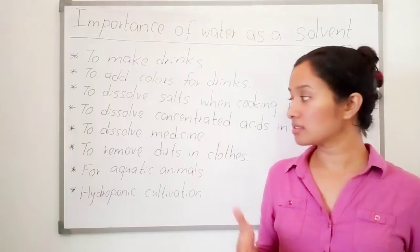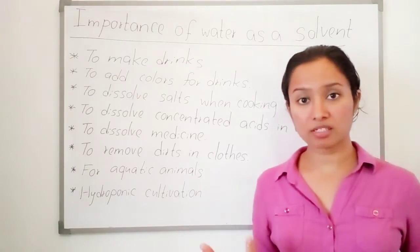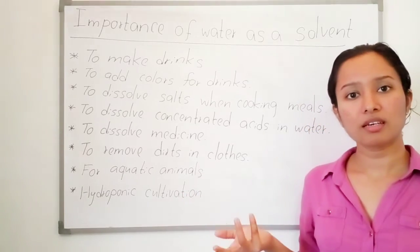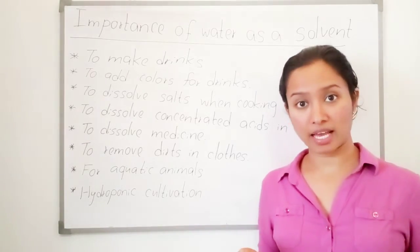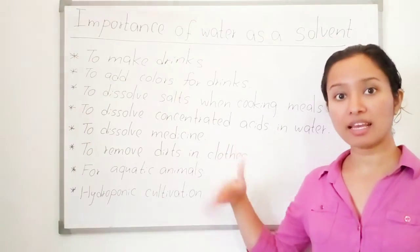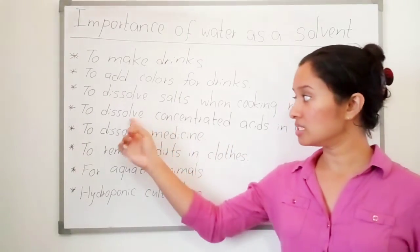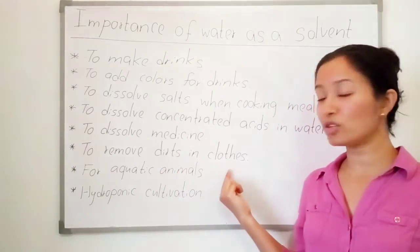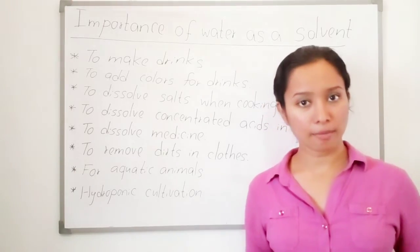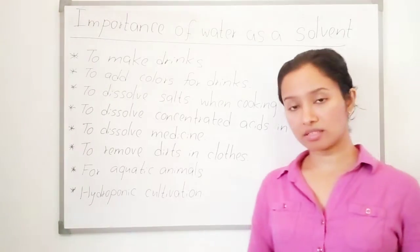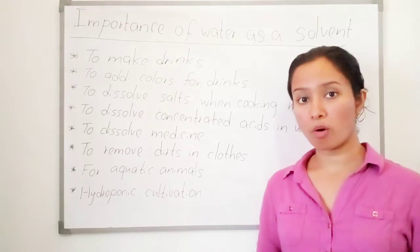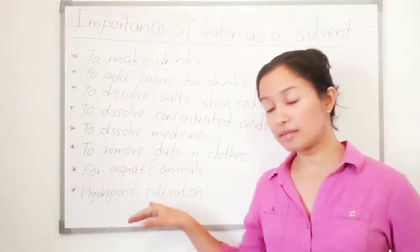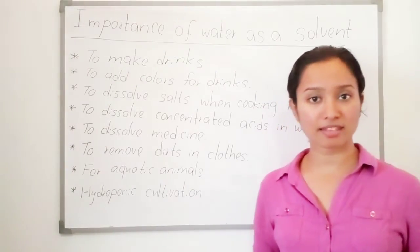Fourth, to dissolve concentrated acid in water when making acid solutions. For example, to make dilute sulfuric acid, we take concentrated sulfuric acid and add water. Fifth, to dissolve medicine. Sixth, to remove dirt from your clothes. Seventh, for aquatic animals to get oxygen for breathing. And finally, hydroponic cultivation — water is important to dissolve fertilizers, nutrients, and other things for the plants.